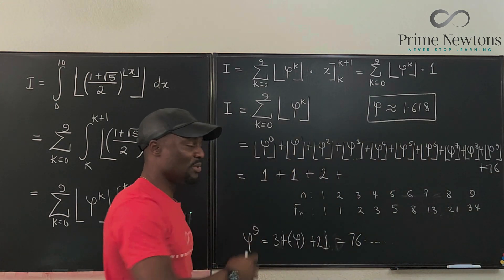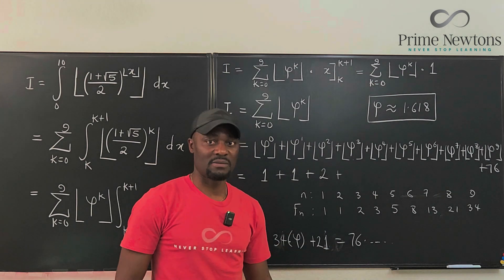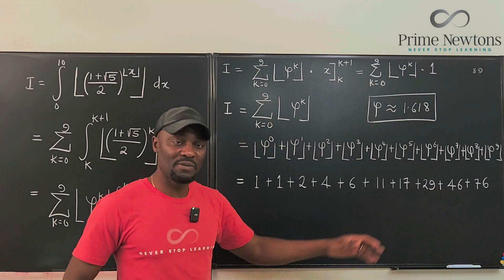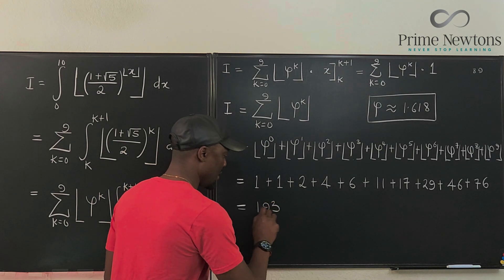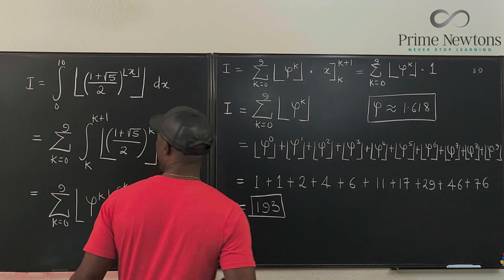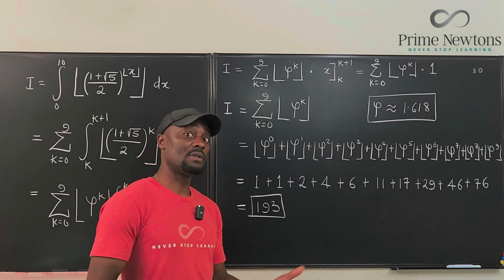So we're going to have a bunch of numbers, which I'm going to quickly check. If we add up all of these numbers, we end up with 193. And this is the value of this definite integral with the floor function as the exponent.